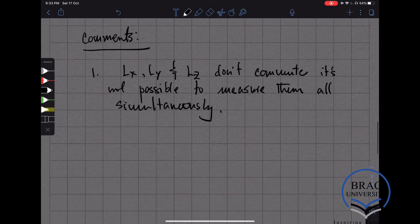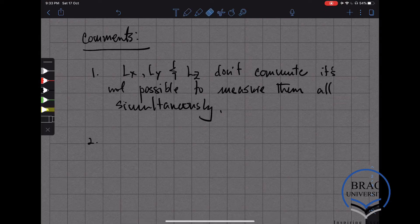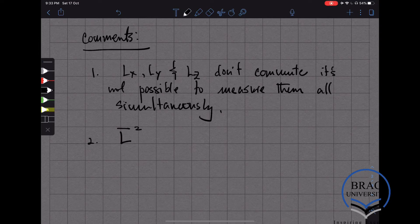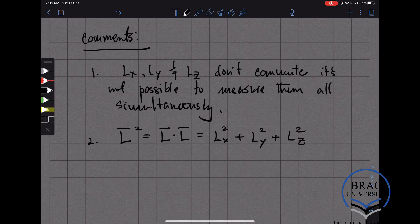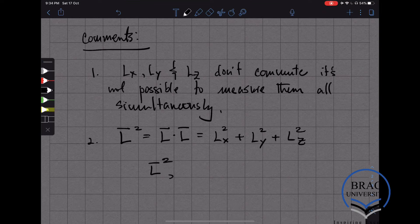This is basically coming from the Heisenberg uncertainty principle. Another interesting thing to note is that the square of the total angular momentum operator, written as L squared, which is a dot product of the vector operator L with itself, can be written more explicitly as Lx squared plus Ly squared plus Lz squared. Now, it's easy to show that this operator commutes with L.